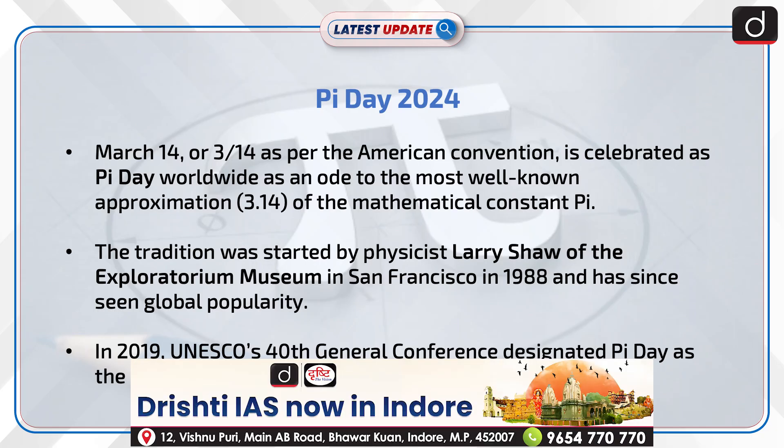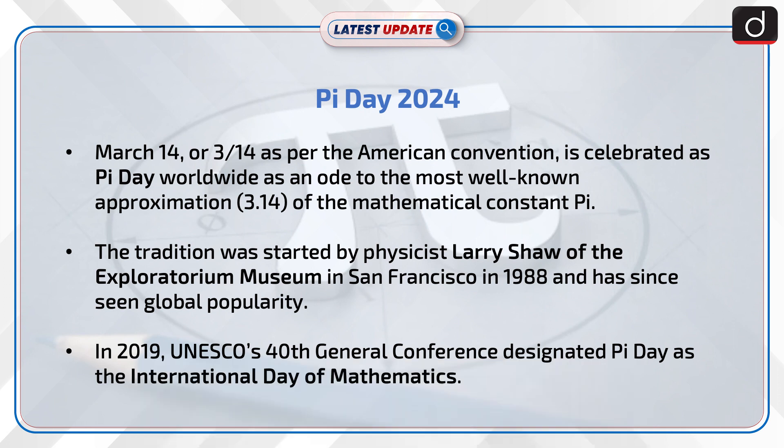March 14, or 3-14 as per the American Convention, is celebrated as Pi Day worldwide as an ode to the most well-known approximation, 3.14, of the mathematical constant pi.